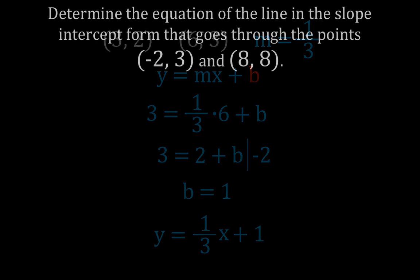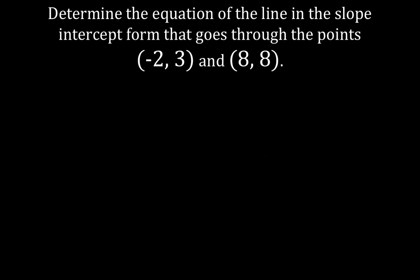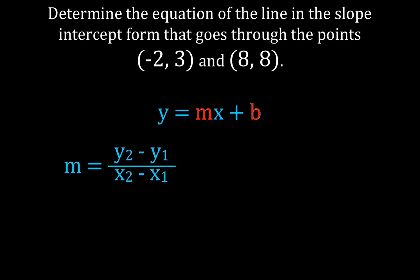Now I'm going to do two more, going a little faster. For the next example I picked one with negative numbers — determine the equation of the line in slope-intercept form that goes through the points (-2, 3) and (8, 8). Once again, slope-intercept form y equals mx plus b; we need an m and a b. We'll use the slope formula again, designating x1, y1 and x2, y2.